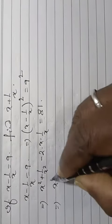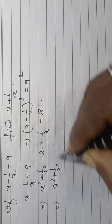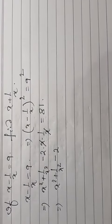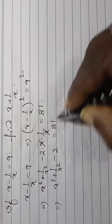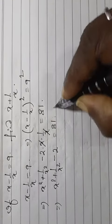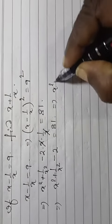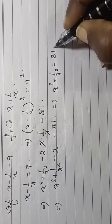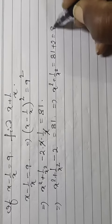Then, x square plus 1 by x square minus 2, because these are cancelled, is equal to 81. Now, x square plus 1 by x square is equal to 81 plus 2, that is 83.